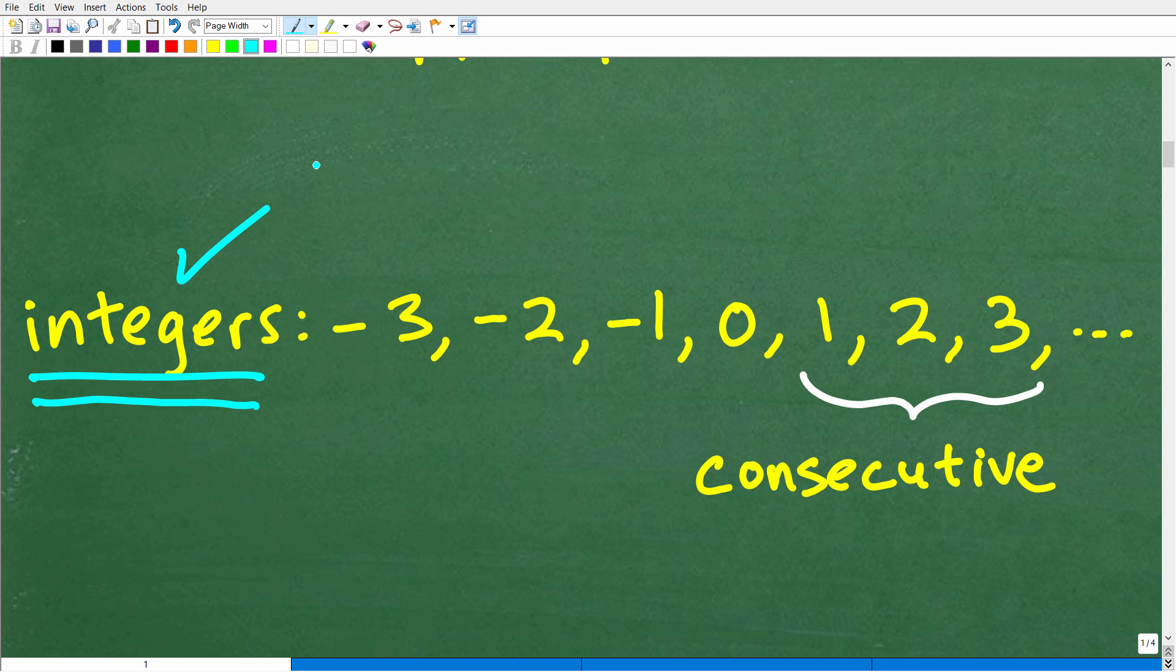Okay, so now that we know what an integer is, we're not looking for numbers like three halves or 1.75. We're looking for these type of numbers. Now, what is the word consecutive mean? Well, consecutive means one right after the other. So, for example, 1, 2, and 3 are an example of three consecutive integers. Okay, so these right here, negative 3, negative 2, negative 1, this is three consecutive integers. So these are numbers that are just right next to one another.